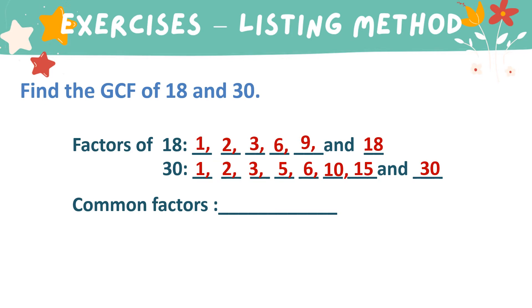The common factors of 18 and 30 are the following: 1, 2, 3, and 6. Among the common factors, we have the GCF or the greatest, which is 6.